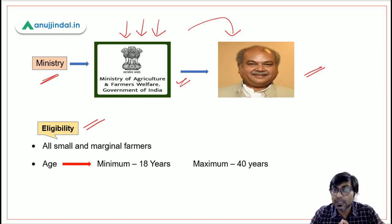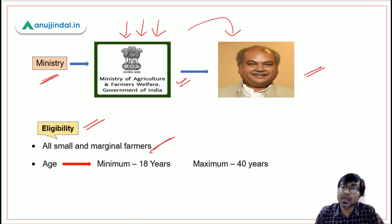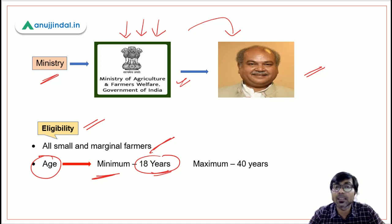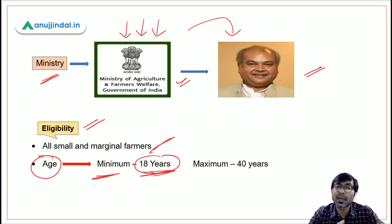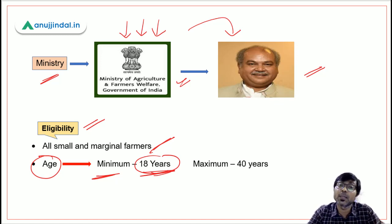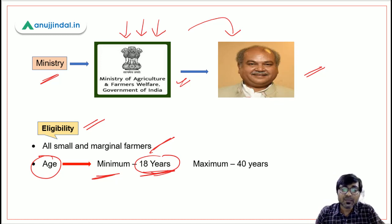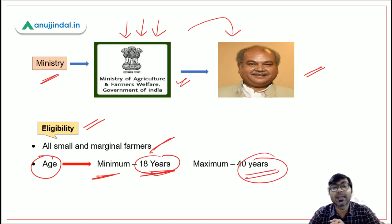Now let's move on to eligibility — which farmers are eligible. The first eligibility is clear: all small and marginal farmers are eligible. Regarding age, the minimum age to enter the scheme is 18 years and the maximum is 40 years. Most government documents and IDs are formed at the age of 18, so applicants must be at least 18 years old. The maximum age of entry is 40 years.